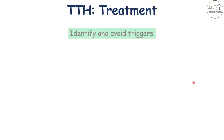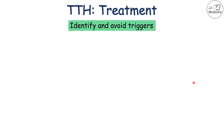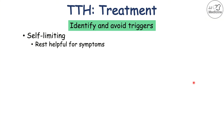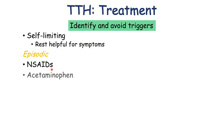Now how do clinicians treat tension type headaches? It's important to identify and avoid triggers — dehydration, hunger, stress, sleep deprivation. Even without treatment, these types of headaches are self-limiting, meaning they will resolve on their own. Rest is helpful for symptoms. For episodic tension type headache, patients can treat with NSAIDs such as ibuprofen or naproxen, acetaminophen or Tylenol, and caffeine can also help reduce some of the pain.